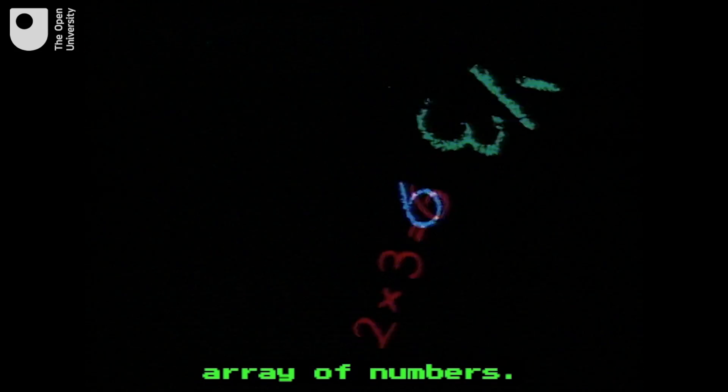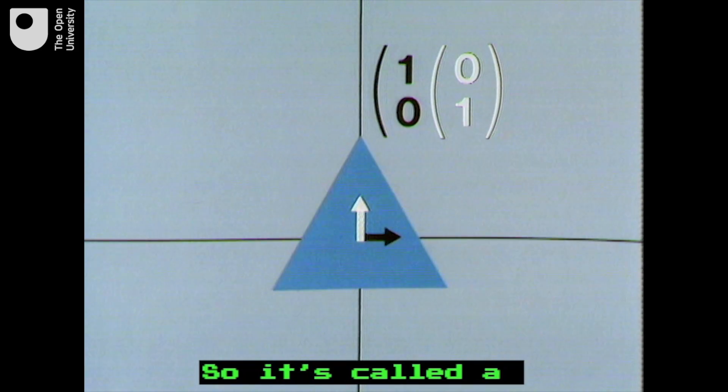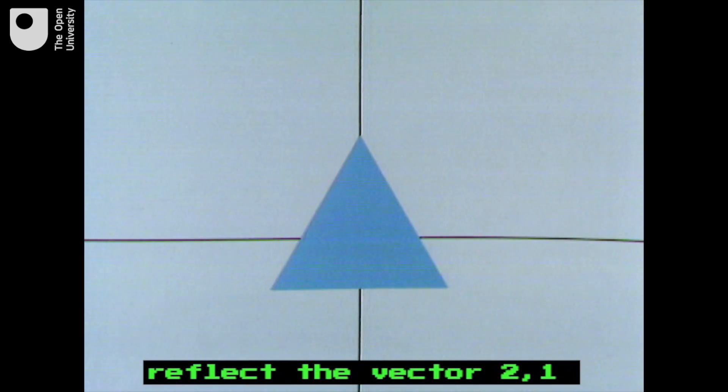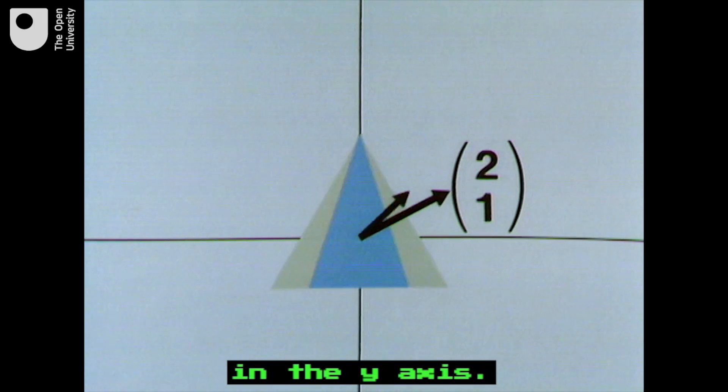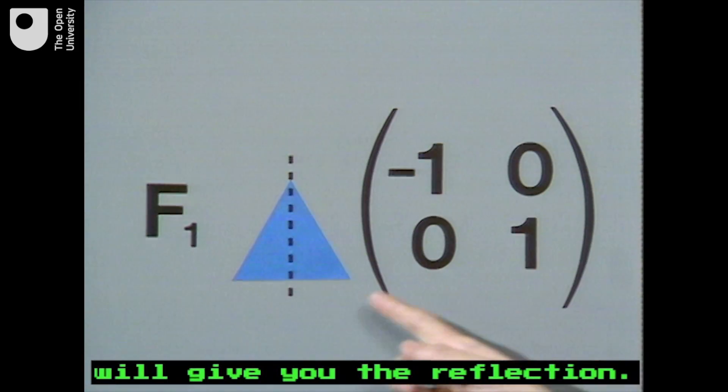A matrix is an array of numbers. This matrix has two rows and two columns, so it's called a 2 by 2 matrix. Let's say you want to reflect the vector (2, 1) in the y-axis. Multiplying the vector by this matrix will give you the reflection.